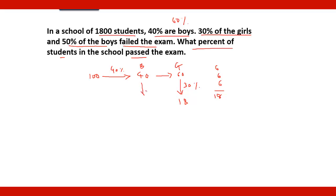As far as boys are concerned, 50 percent of boys failed. So 50 percent of 40 is 20 — meaning 20 boys failed out of 100. 18 girls failed out of 100. So together, 20 plus 18 equals 38 students failed out of 100.